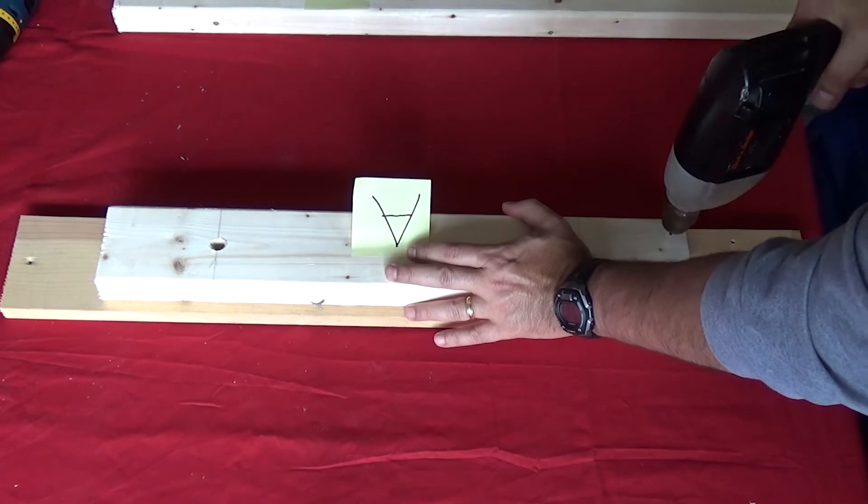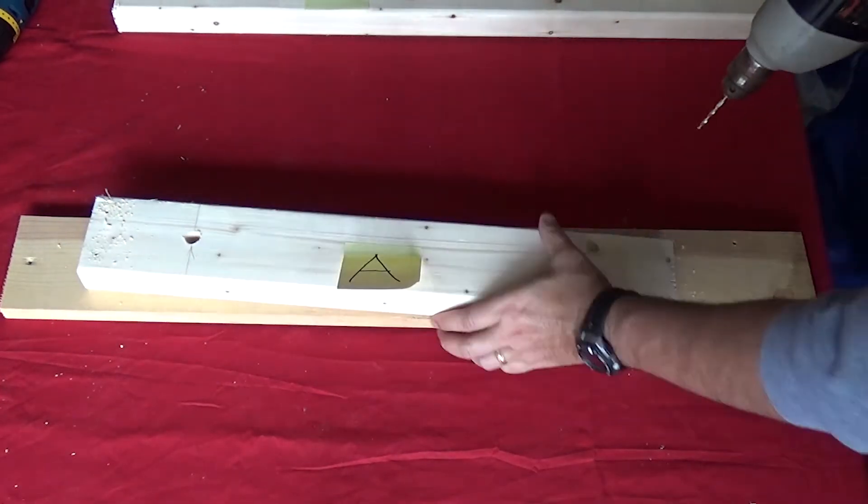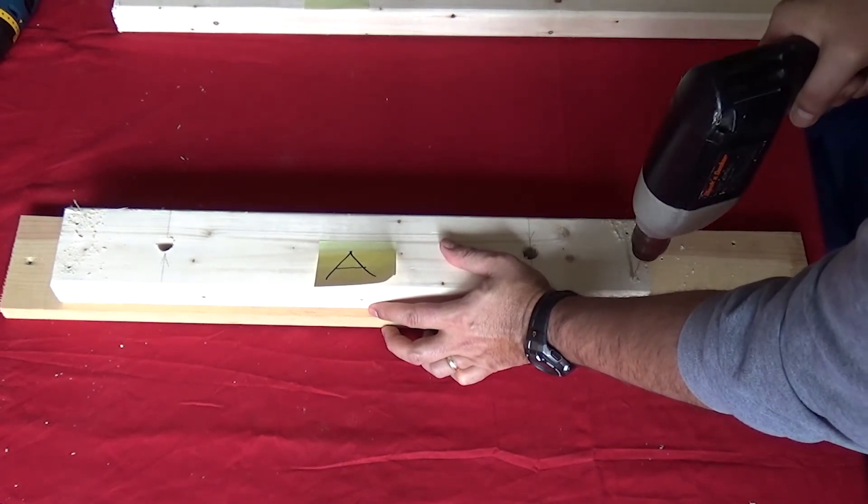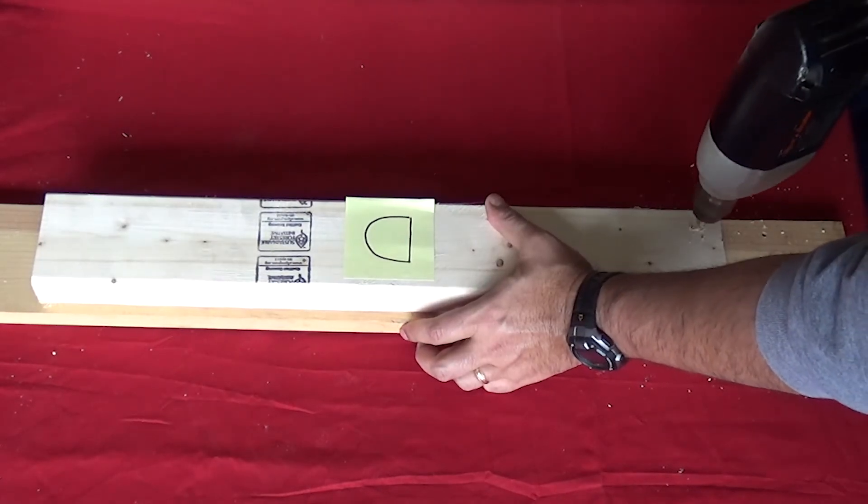Before assembling the frame, it is a good idea to pre-drill smaller holes using a smaller drill bit. This will help when drilling the actual 3 inch screws. Here are A and D pieces which are the upper and lower beams.